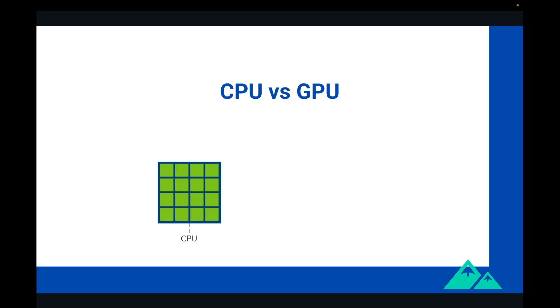A GPU, or graphic processing unit, is a specialized processor that is designed to handle complex, parallel workloads like graphics rendering and machine learning. GPUs have thousands of smaller cores that work together to handle large amounts of data at once, making them much faster than CPUs for certain types of workloads. Matrix operations can be easily parallelized on several small cores, which is why GPUs excel in this domain. Also, GPUs typically have many more floating point units than CPUs, which allows them to perform floating point operations much faster. You now know why a CPU is often not enough for today's AI workloads, and why specific hardware is often very important.